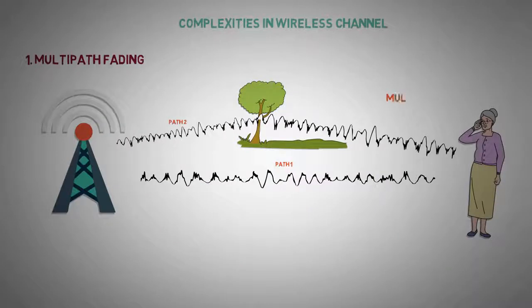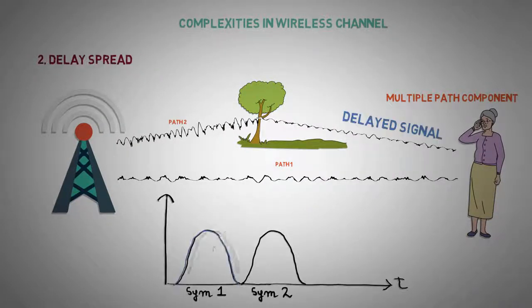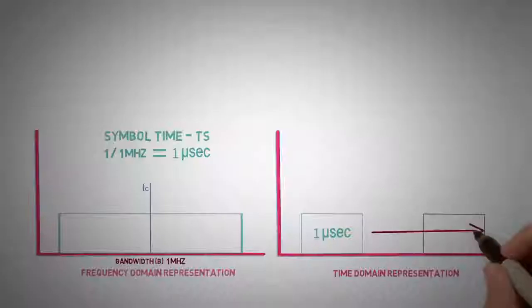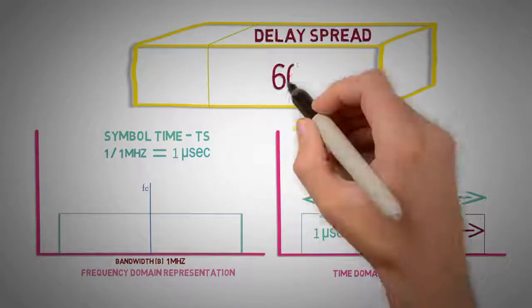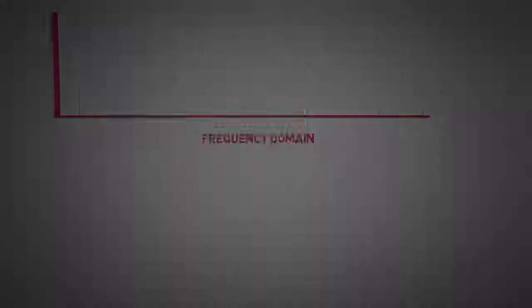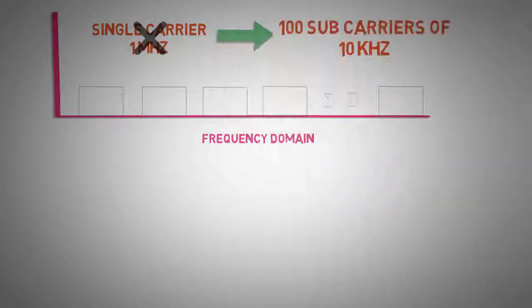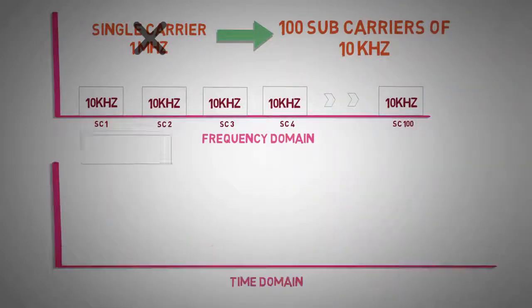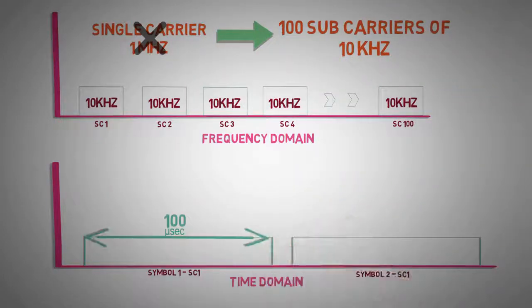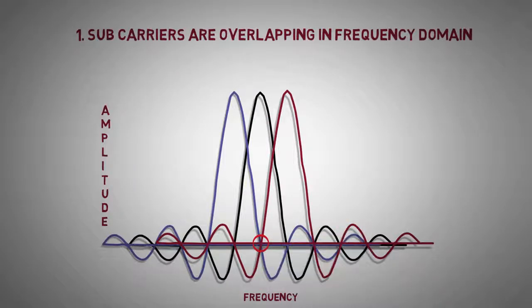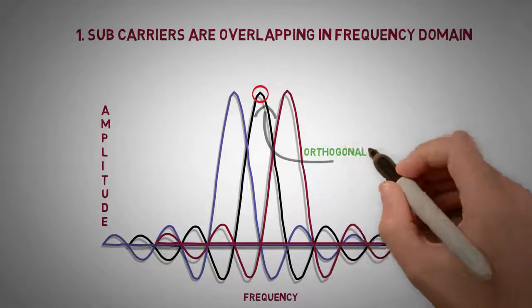So friends, in this video we have shown what are the limitations of wireless channel, how wideband single channel are inefficient for transmission. To overcome, how wideband single channel is divided into small sub-carriers and increase efficiency by reducing delay spread. How concept of orthogonality is introduced in FDMA and achieved multi-fold throughput.